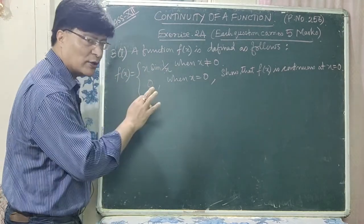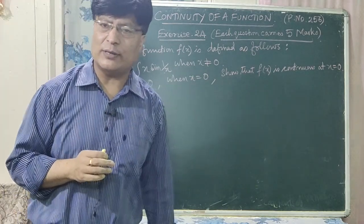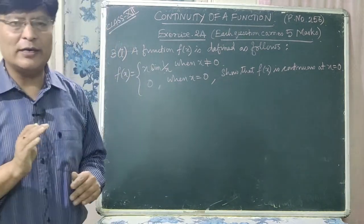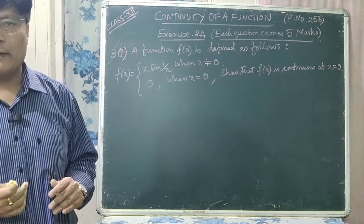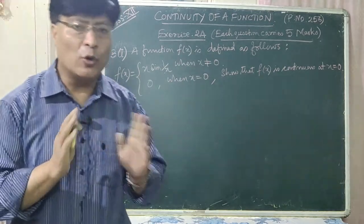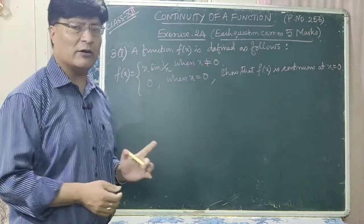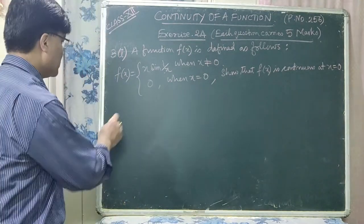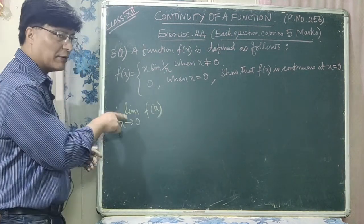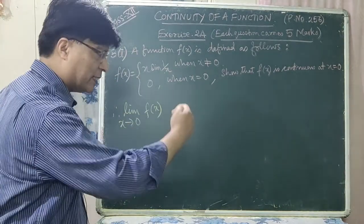Since for both x greater than 0 and x less than 0 we are using the same function f(x) = x·sin(1/x), there is no need to find the separate right hand limit and left hand limit. I already told you this in the previous online class. So if you use the same function for x greater than 0 and x less than 0, no need of getting separate right hand limit and left hand limit when x tends to 0.